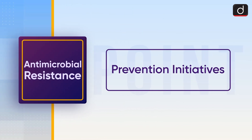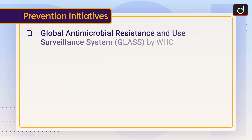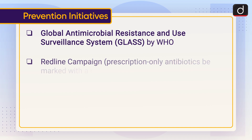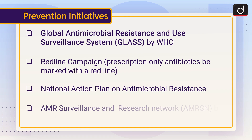Now moving on to prevention initiatives. The Global Antimicrobial Resistance and Use Surveillance System, that is GLASS, by WHO. Next is the Red Line Campaign — under this campaign, prescription-only antibiotics are marked with a red line. National Action Plan on Antimicrobial Resistance, and the AMR Surveillance and Research Network, that is AMR-SRN, by ICMR.